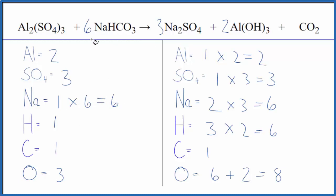And then for our hydrogens, one times six. That gives us six. Those are balanced too. For the carbon, one times six. Six carbons. And then for the oxygens, three times six is 18. But we're getting close.